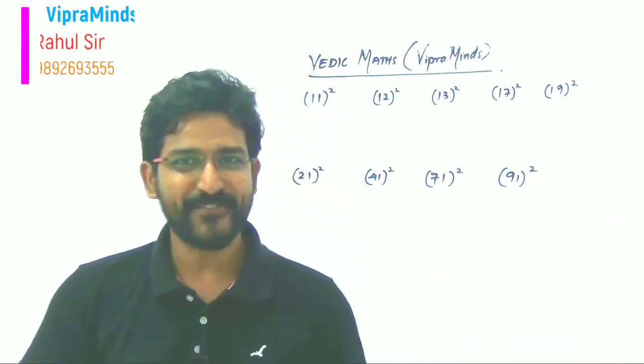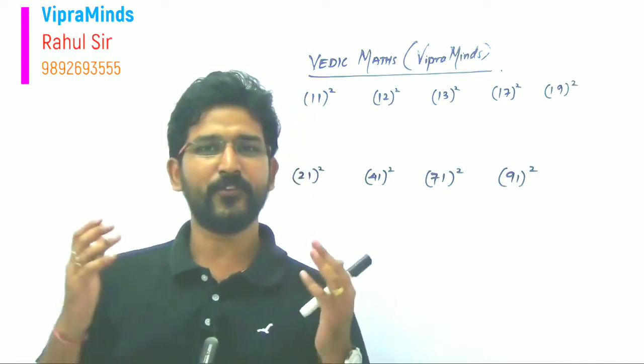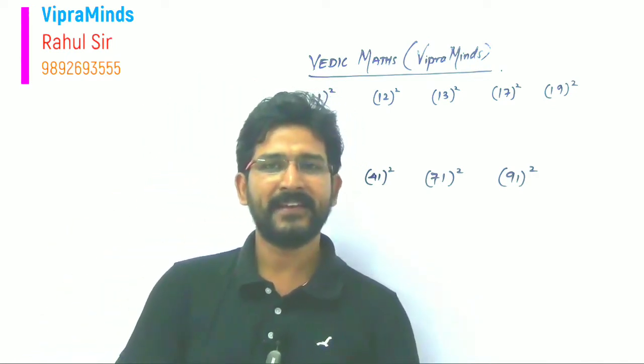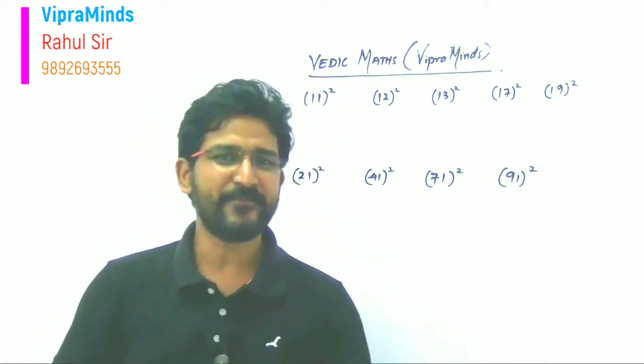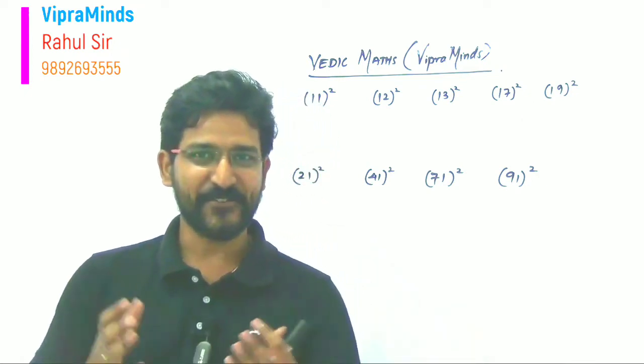Hello friends, welcome to VipraMinds channel. Today's session we have discussed how to find out the square of two digit numbers that start with one and end with one in just few seconds with simple calculation. So before proceeding for this video, please subscribe our channel for regular updates. Thank you.